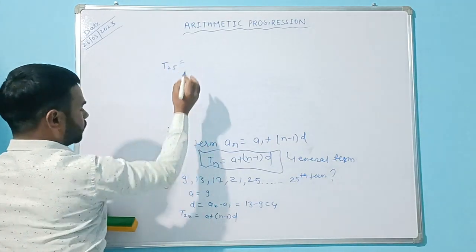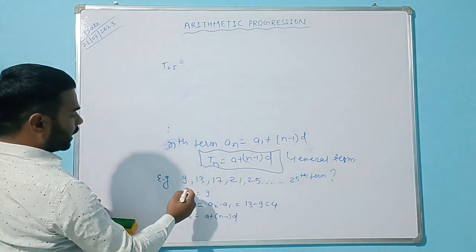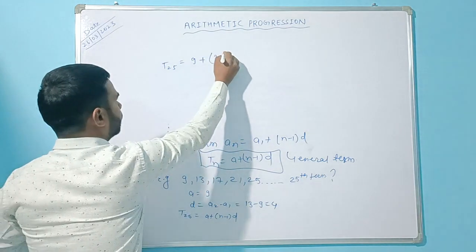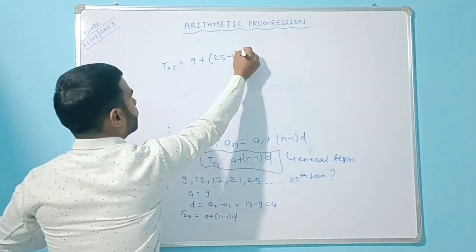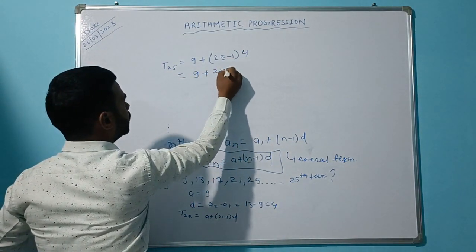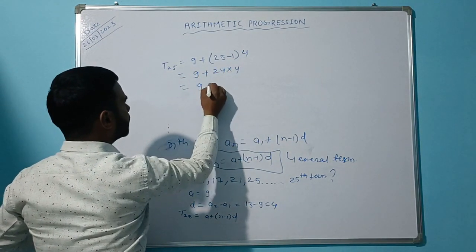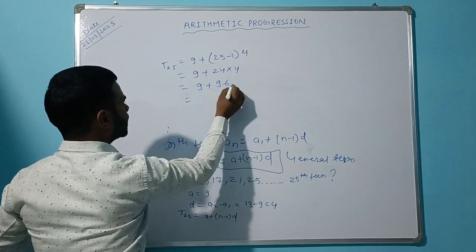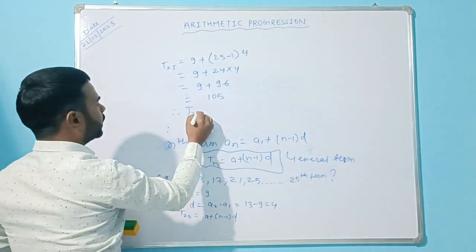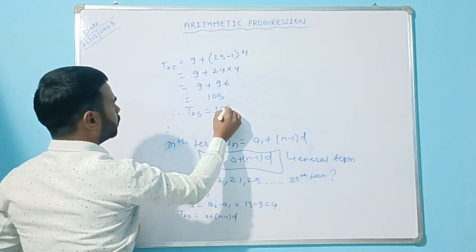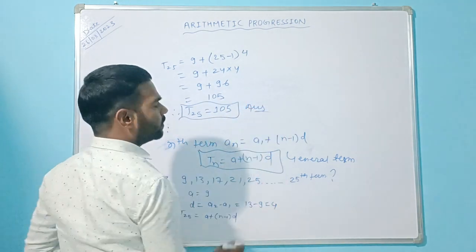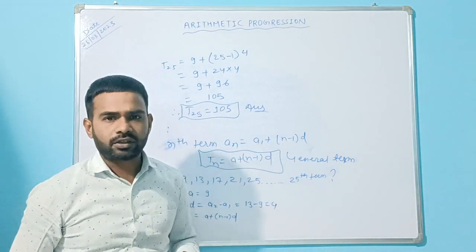t25 = a + (n − 1) × d = 9 + (25 − 1) × 4 = 9 + 24 × 4 = 9 + 96 = 105. Therefore the 25th term is equal to 105. Hopefully you all have understood it. Thank you so much.